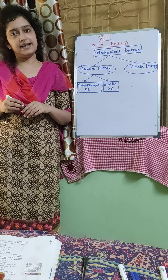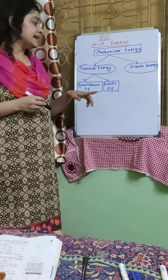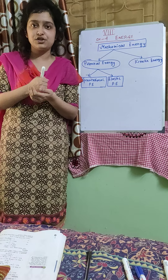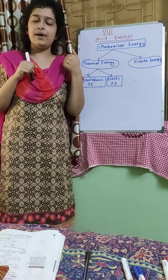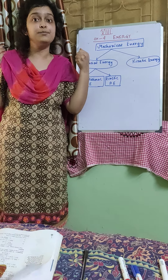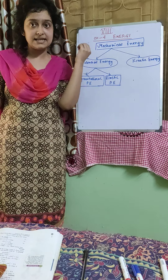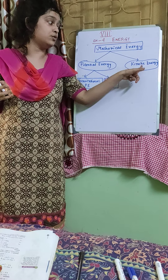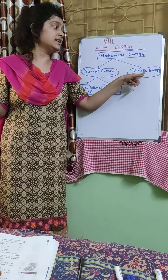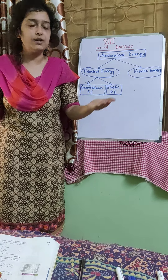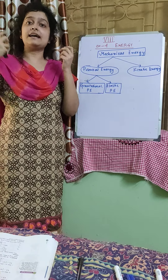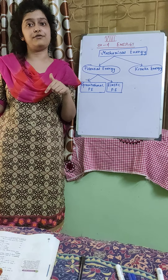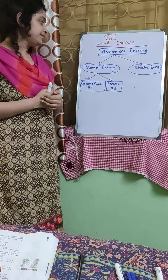Another type is elastic potential energy. It is that form of potential energy which is possessed by a body when it is compressed or bent. For example, a stretched bow or a stretched catapult. When you are stretching the catapult, it possesses elastic potential energy, and when you release it, the stone flies out with great speed. The stone is getting kinetic energy — the energy possessed by a body due to motion. So the stone gets kinetic energy from the elastic potential energy. This is also another example of transformation of energy: elastic potential energy to kinetic energy.